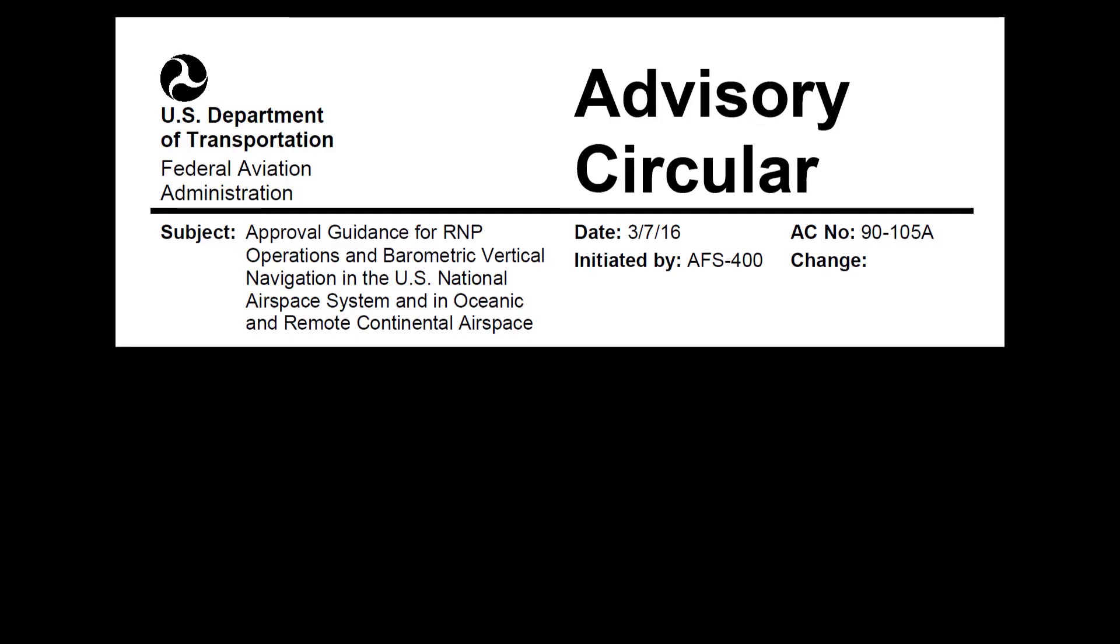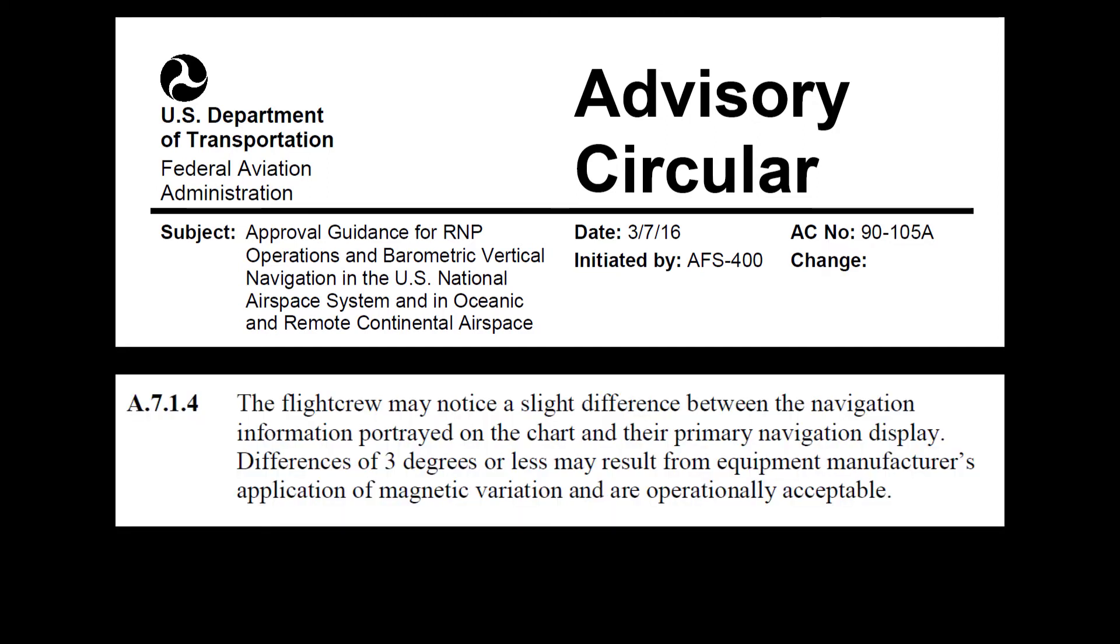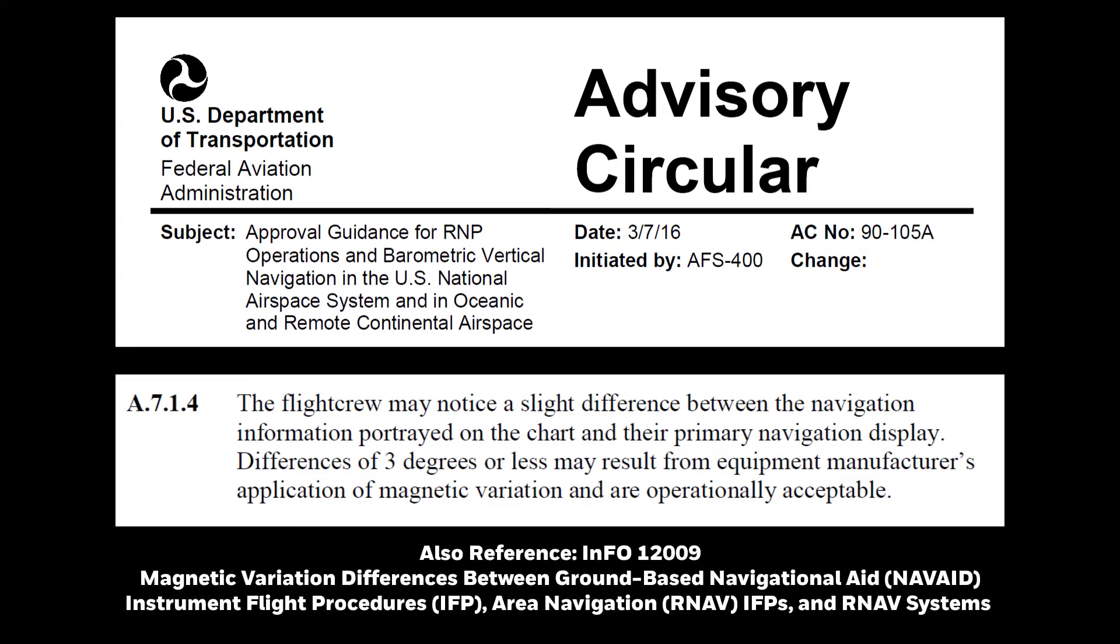Advisory Circular 90-105A approval guidance for RNP also addresses this. It says that the flight crew may notice a slight difference between the navigation information portrayed on the chart and their primary navigation display. Differences of 3 degrees or less may result from equipment manufacturer's application of magnetic variation and are operationally acceptable. Load this up in your favorite app and you'll end up with different numbers. This is becoming common with more and more RNAV procedures being added. Check out the Bruiser 1 and Eagle 6 arrivals into Phoenix Sky Harbor on the Zuni and Dojo leg.